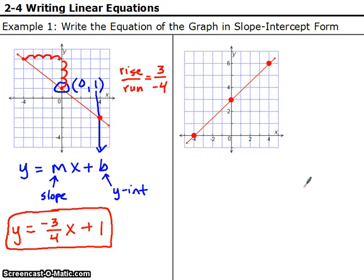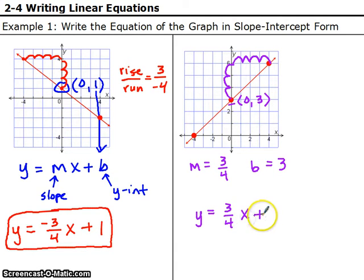So try to write the equation of the next graph, and come back and see if you got it right. So this is when we have a y-intercept of 3, and then a rise of run, 1, 2, 3 rise, 1, 2, 3, 4 run, and since I went up and right, those are both positive. So m is 3 fourths, b is 3, so y equals 3 fourths x plus 3.